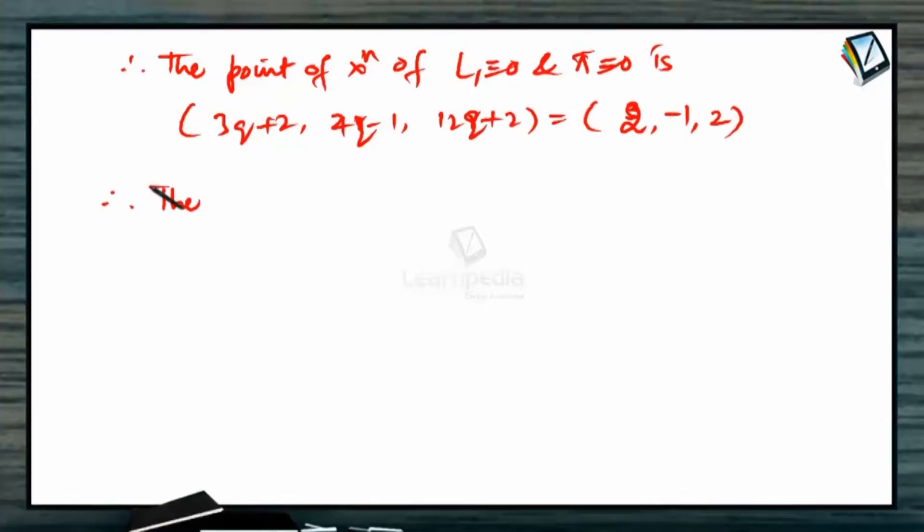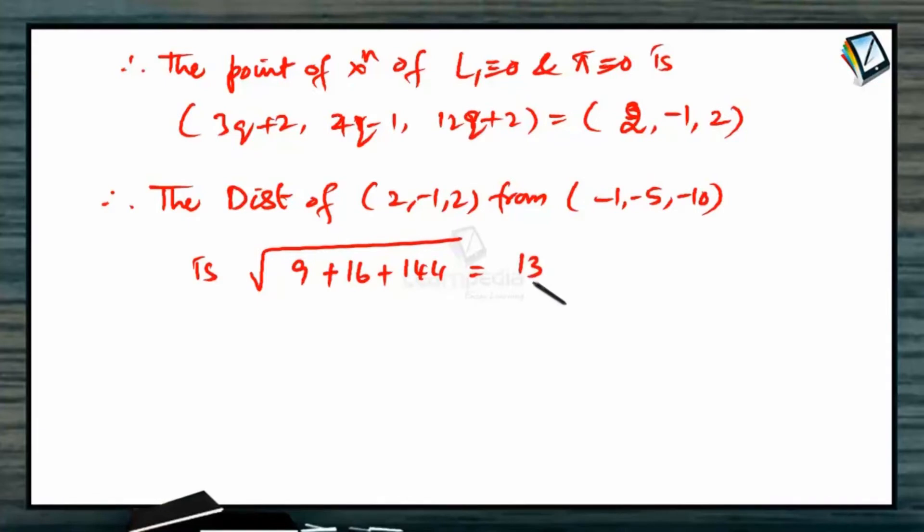Therefore the distance of 2, minus 1, 2 from minus 1, minus 5, minus 10 is root of 2 plus 1 is 3, 9, minus 1 plus 5 is 4, that is 16, and 2 plus 10 is 12, 144, that equals 13. 13 units is the distance of the point.